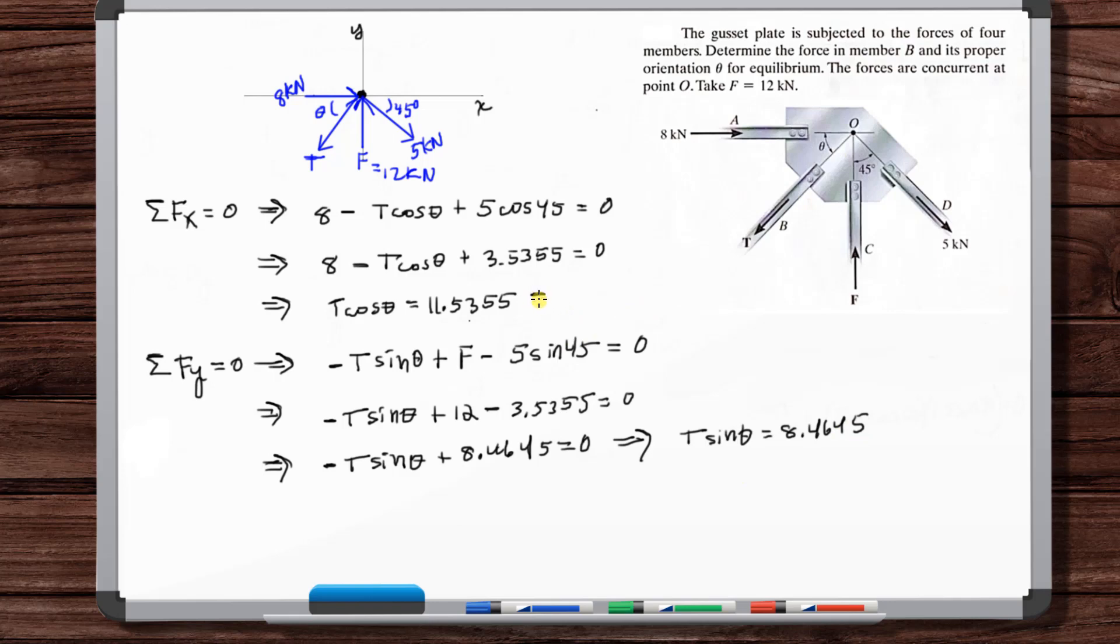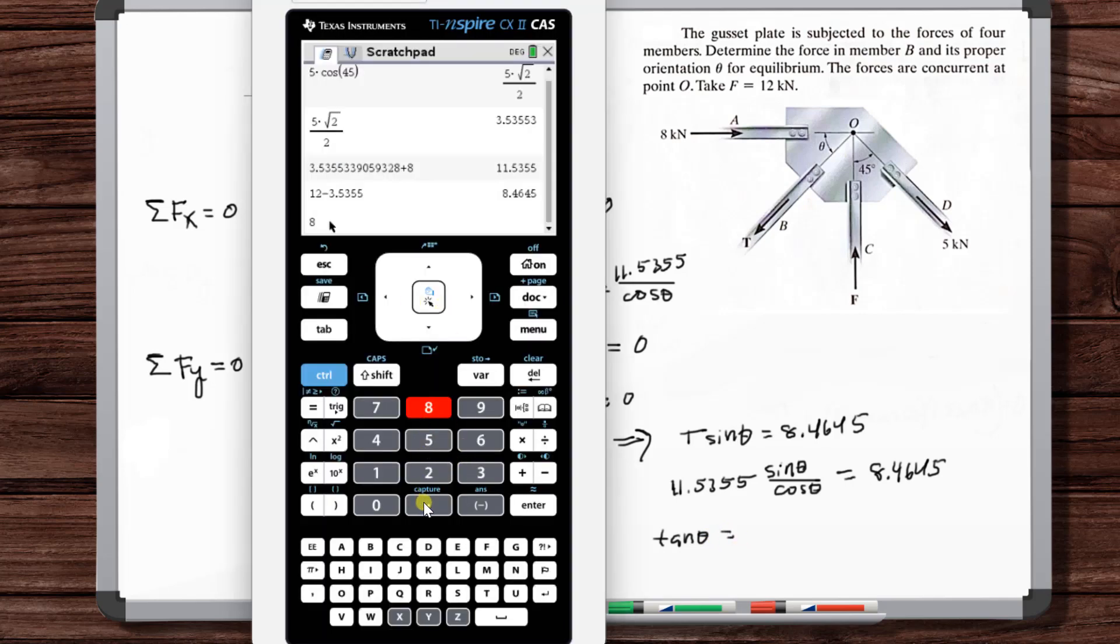So now we just need to solve for T or theta. So let's solve for T here, and now let's substitute this T in here. So we get tangent of theta is equal to 8.4645 divided by 11.5355.